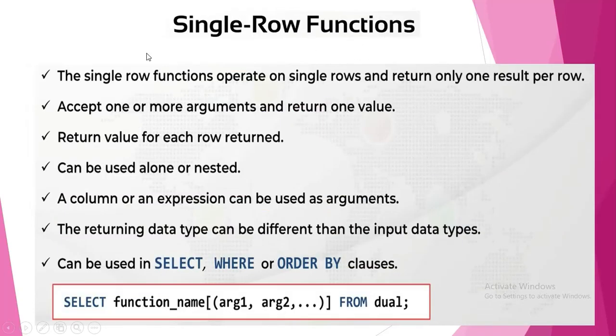So single row functions operate on single rows and return only one result per row. They accept one or more arguments and return one value. They return a value for each row returned, can be used alone or nested. Nested means function within a function. The innermost function will execute first and then you come to the outermost function. Innermost function output is input for outermost function. A column or an expression can be used as arguments. The returning data type can be different than the input data types. Can be used in select, where, or order by clauses.